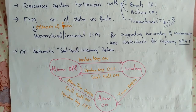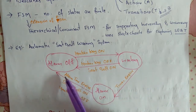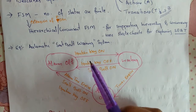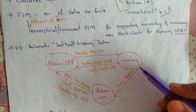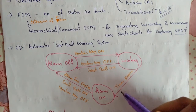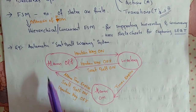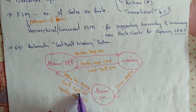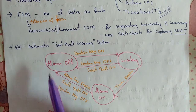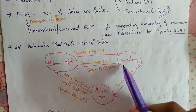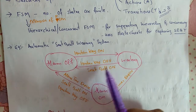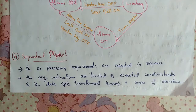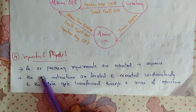An example of a state machine is the automatic seat belt warning system. There are three states: alarm off, waiting, and alarm on. When the vehicle ignition is turned on and the seat belt is not fastened within 10 seconds, the system generates an alarm signal. The alarm turns off when the alarm time expires, the driver fastens the seat belt in time, or the ignition key is turned off.